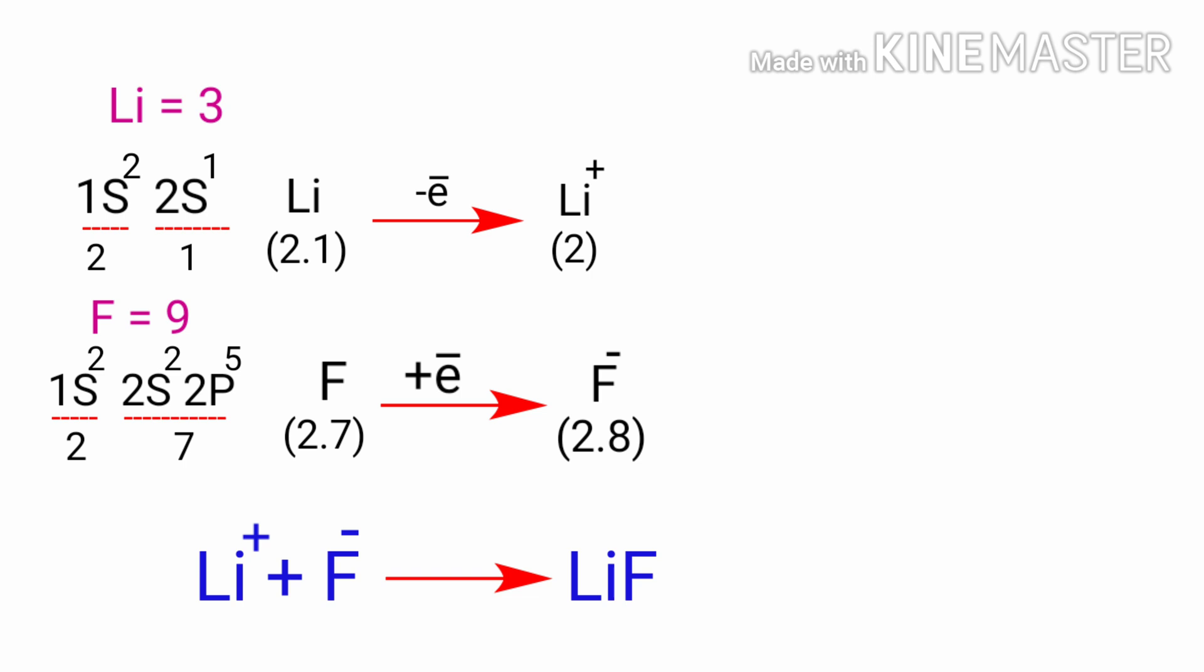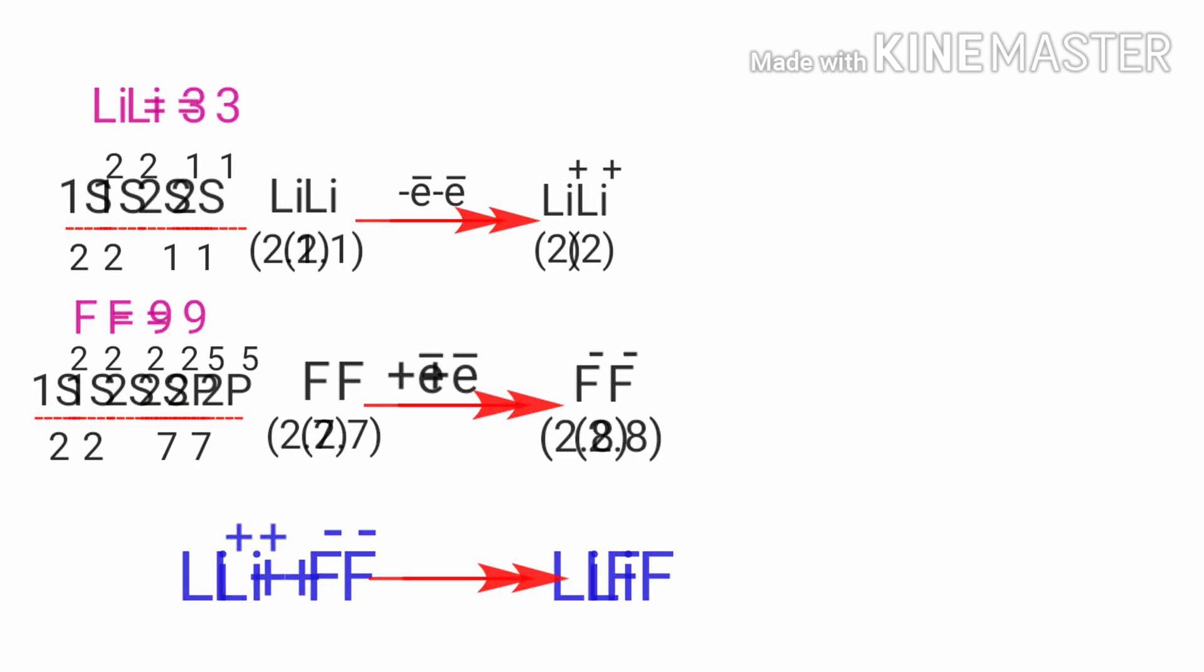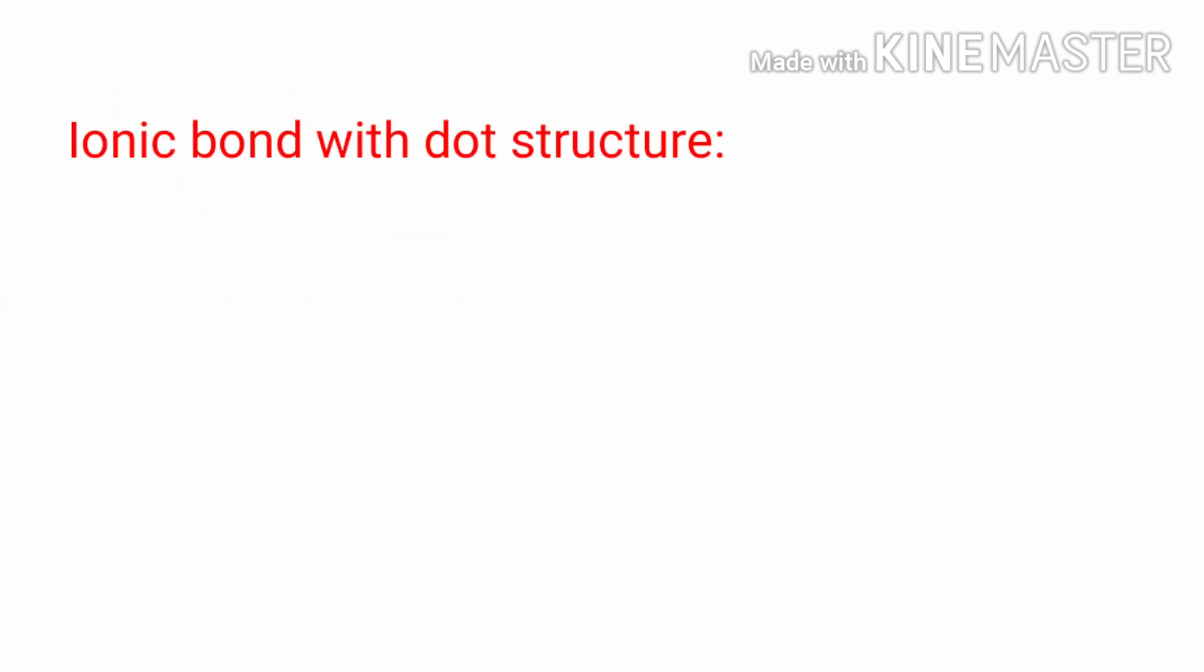In order for a lithium atom to lose an electron, it must be in presence of a suitable receiver like a fluorine atom. Ionic bond with dot structure.